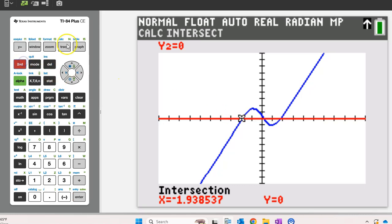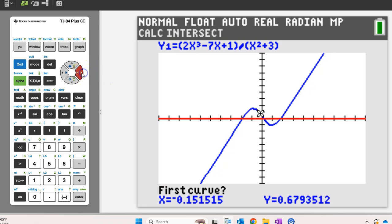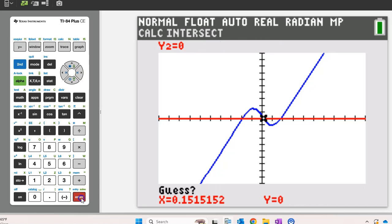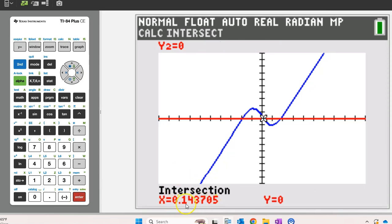Hit second trace 5 again. Move the pointer close to the second zero and hit enter three times. So there's the second one, 0.1437.